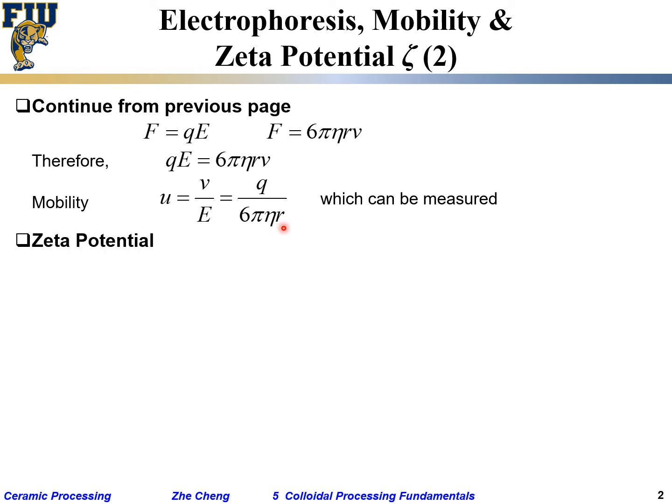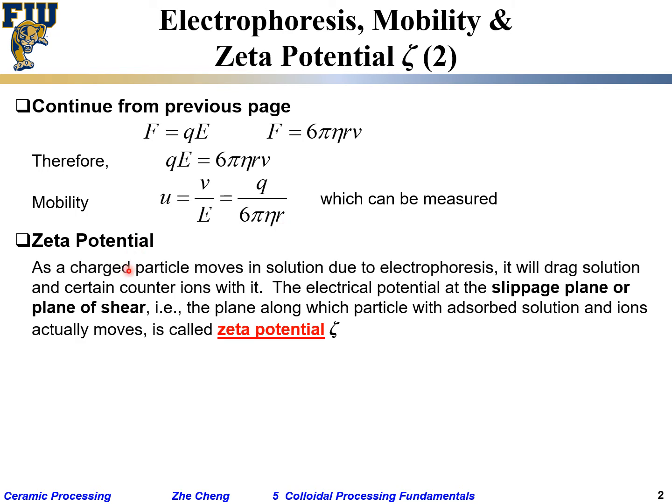The zeta potential is a related concept. For charged particles in suspension, as it moves through the solution, because of electrostatic interaction, it will drag some solution together with it. The particle will drag some charge, water molecules, and certain counter ions with it. You can hardly imagine the particle just moves by itself with every water molecule sliding through - it drags solution and counter ions together.